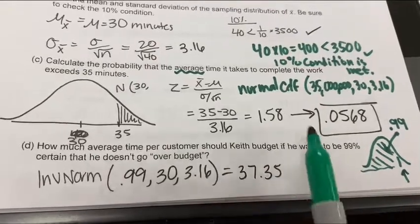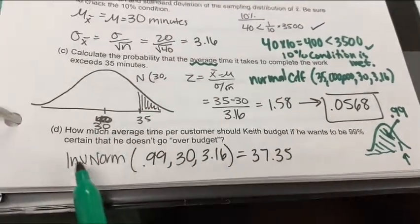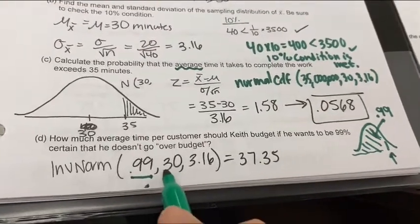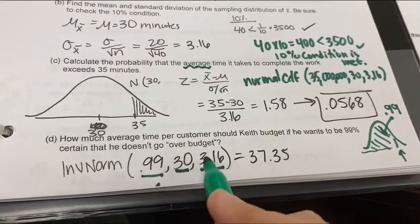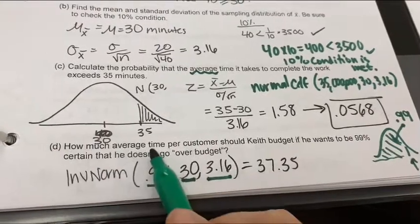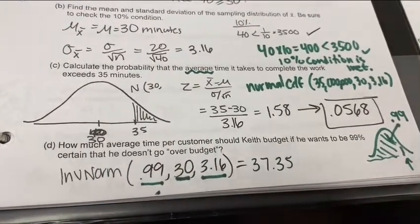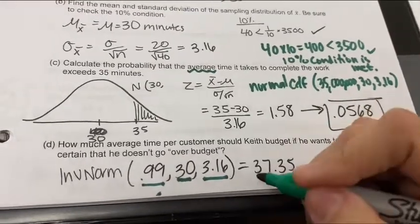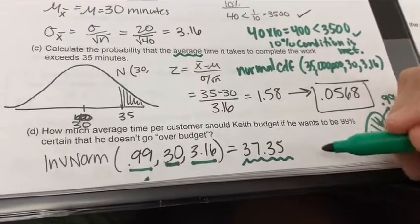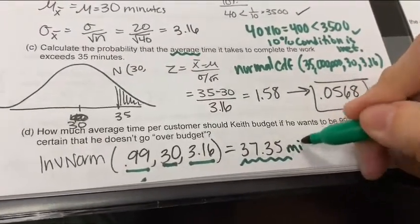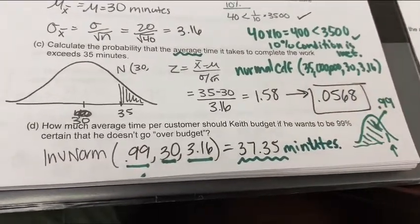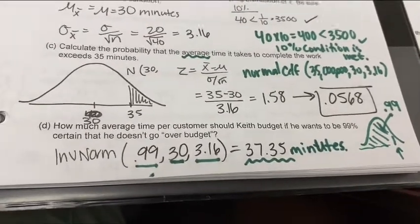So working backwards, instead of normal CDF, I need inverse normal. So if the area under the curve is 0.99, the mean is still 30 and the standard deviation is 3.16, then how much average time should he budget if he wants to be almost positively certain he won't go over? He should budget an average of 37.5 minutes if he wants to make sure he doesn't go over. Great job, guys. See you next time.